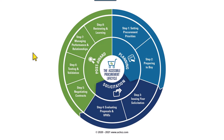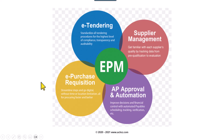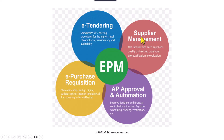The next diagram is another picture — I am taking these different diagrams so that your understanding of the entire business process flow becomes crystal clear. This is a short diagram for EPM, which stands for Enterprise Performance Management. There is a module in Oracle Fusion for EPM which connects all these areas. This includes e-tendering — the standardizing of all tendering procedures for the highest level of compliance, transparency, and auditability — which takes place in the sourcing module. Then there is supplier management: getting familiar with each supplier's quality by tracking data from pre-qualification to evaluation.